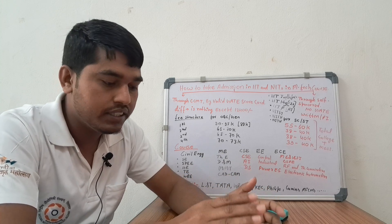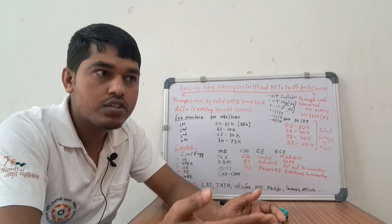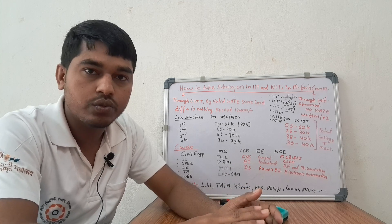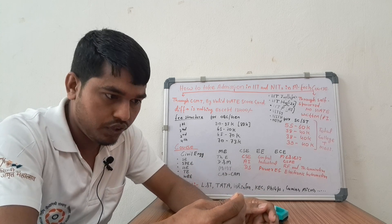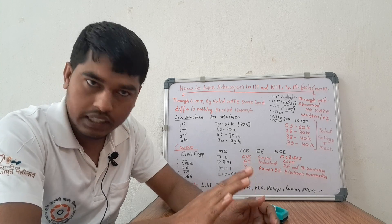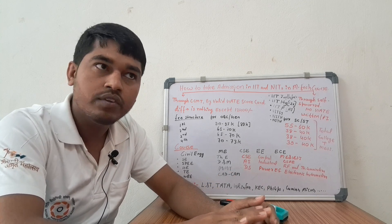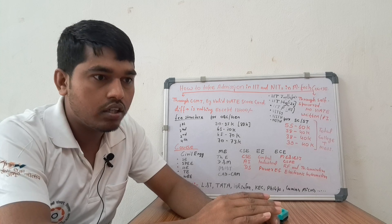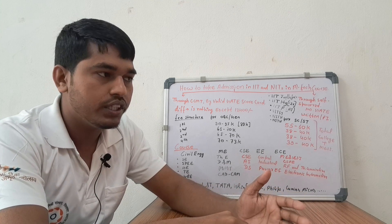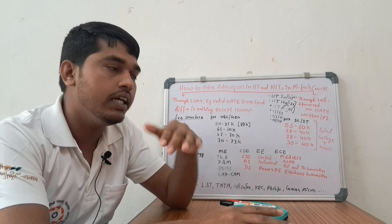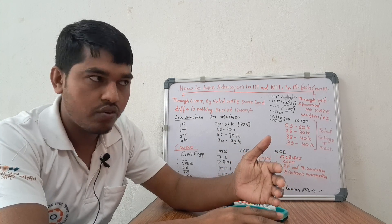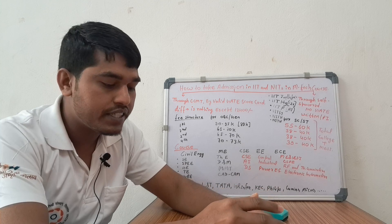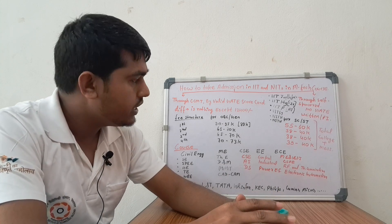In M.Tech admission there are two ways: with a GATE scorecard and without a GATE scorecard. Some IITs and NITs are offering admission without a GATE scorecard. If you have not qualified in GATE or don't have a valid GATE scorecard, you can apply to specific IITs and NITs. They offer notifications for some specific branches only, not every branch.